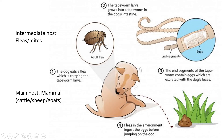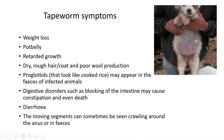Tapeworm symptoms include a pot belly (enlarged belly), white gums, retarded growth in young animals, and a rough dry coat. In sheep there will be poor wool production. The proglottids, which look like grains of cooked rice, may appear in the feces of infected animals. Digestive disorders such as intestinal blockage may cause constipation, and in severe cases death, but also diarrhea as the body tries to expel the parasite. Moving segments can sometimes be seen around the anus.